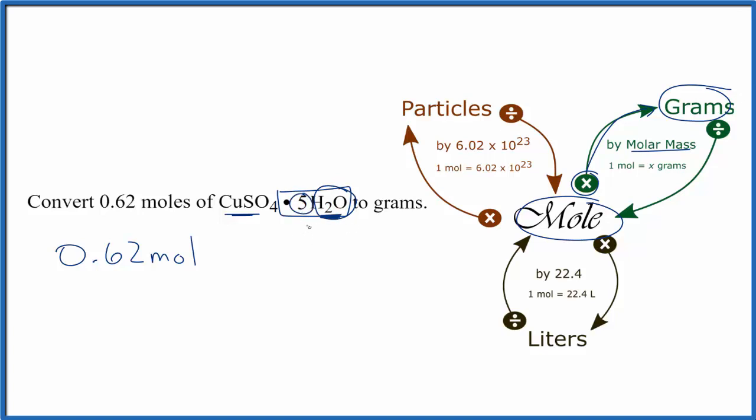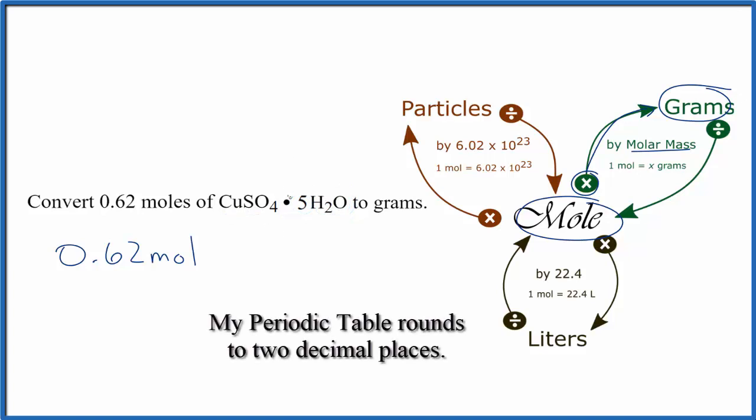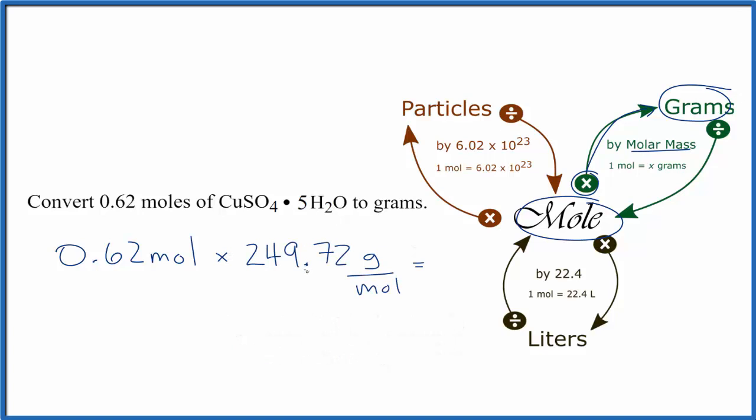If you need help finding the molar mass for CUSO4.5H2O, there's a link in the description of this video to help you do that. So for the molar mass of this copper 2 sulfate pentahydrate, we end up with 249.72 grams per mole.